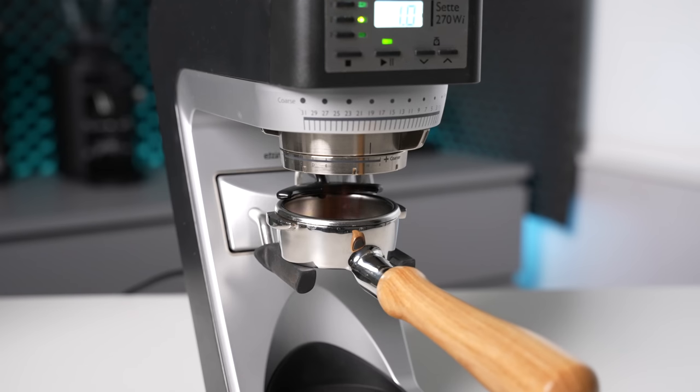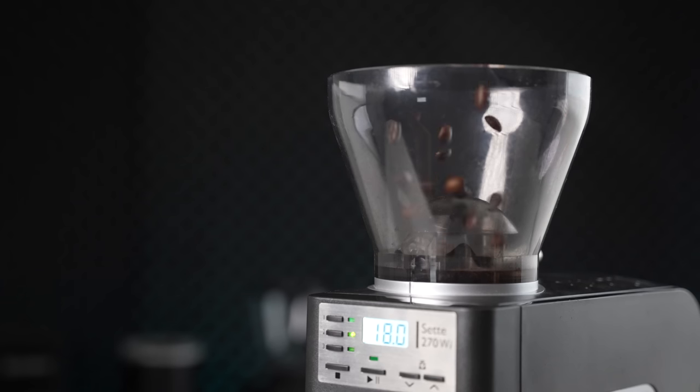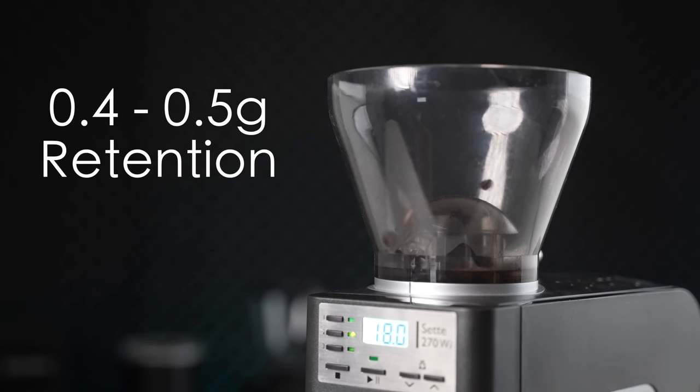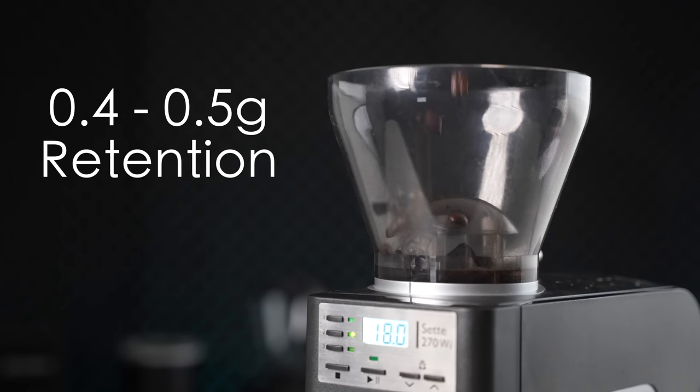Grinding an 18 gram dose of espresso took just 11 seconds. For comparison, I was programming in times closer to 16 seconds on the new Mahlkonig X54. Grind retention was also respectable at around 0.4 or 0.5 grams between shots, which is manageable if you're considering single dosing.